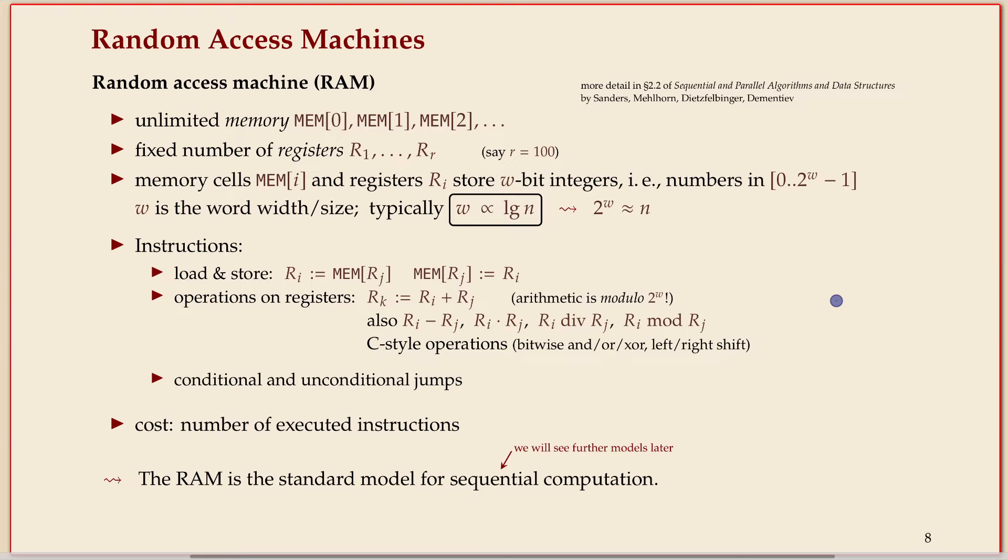Let me introduce the random access machine model before we close for today. The random access machine is basically one big array with operations on it. The array is not infinite but unbounded; it's as big as you use it. If you want, you can think of this as whenever you need more memory, you build more discs. That's not quite how computers work these days, but cloud computing brought us even closer.